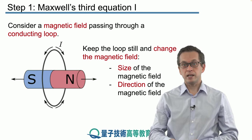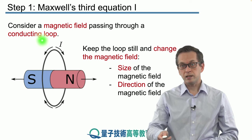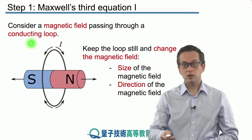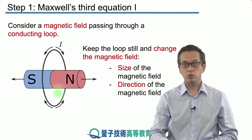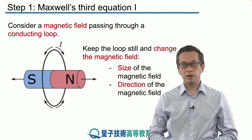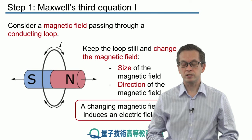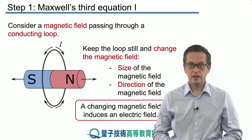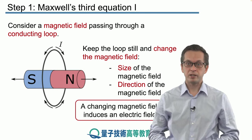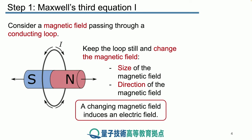What that does is actually produce an electric current going in this loop, and depending on which way we move the magnet, the direction of the current will also change. This is known as Faraday's law of induction. We notice that a changing magnetic field induces an electric field.